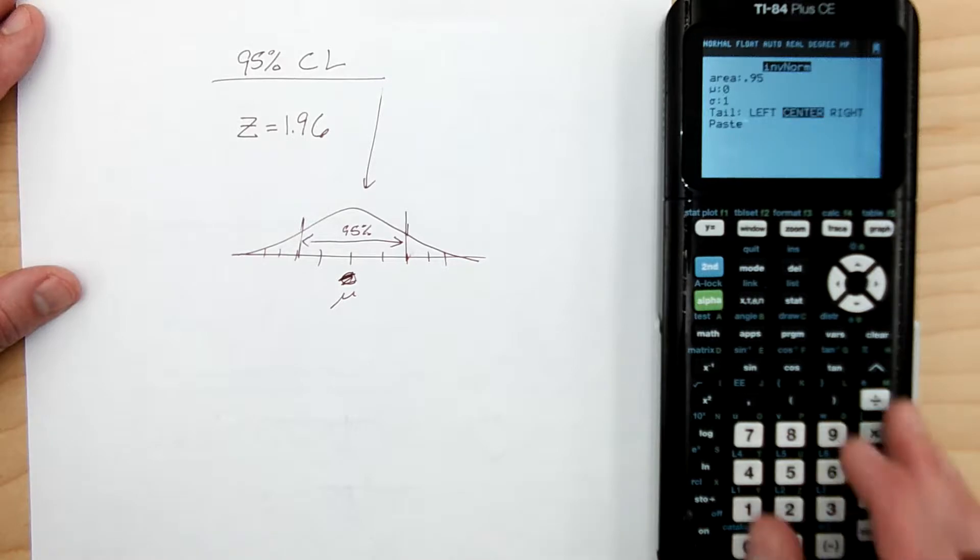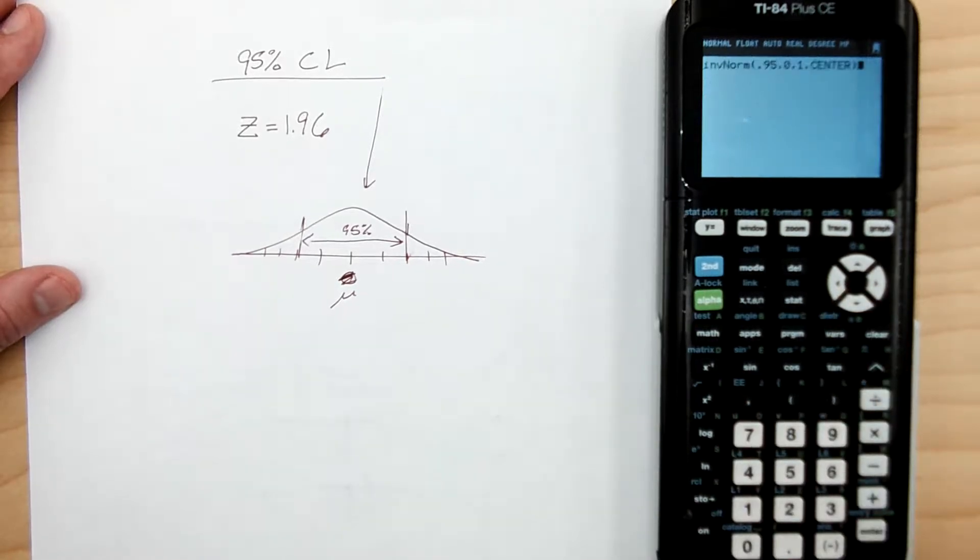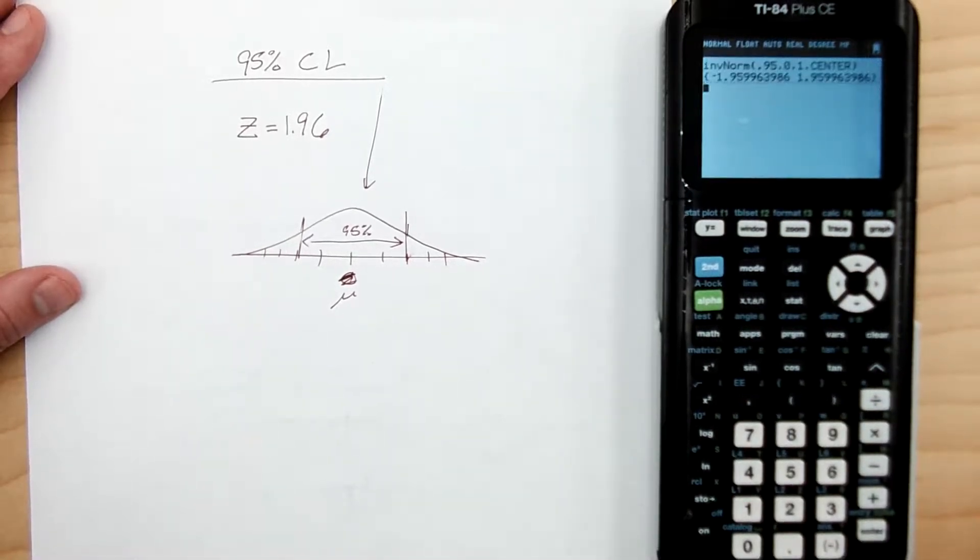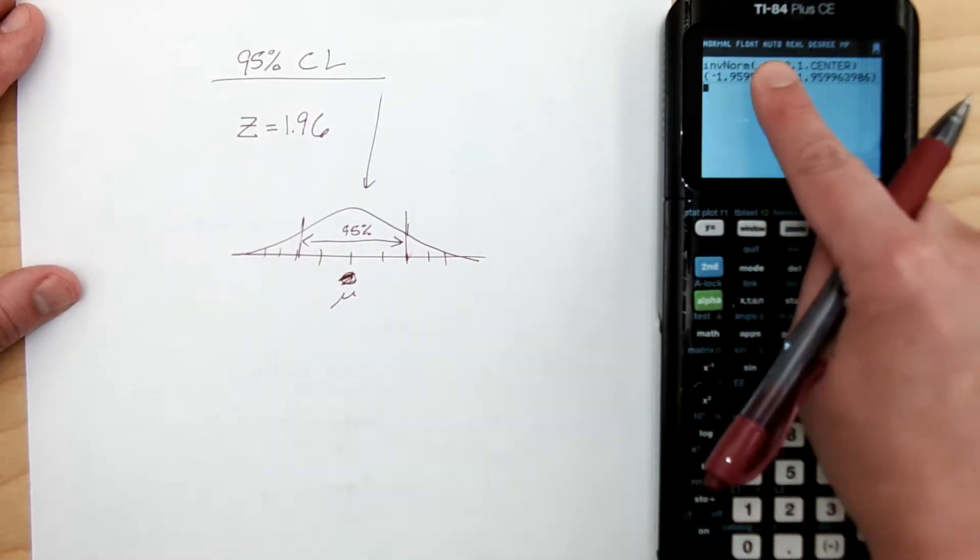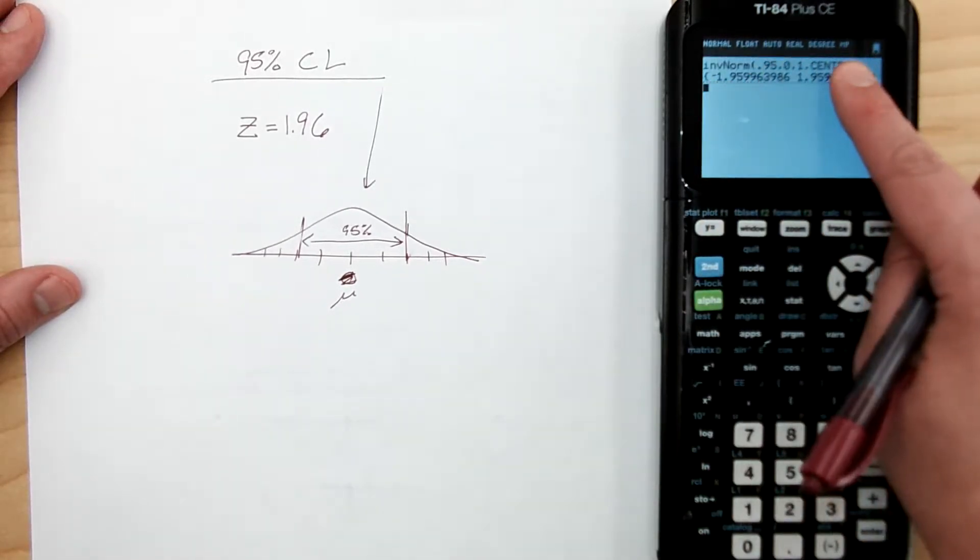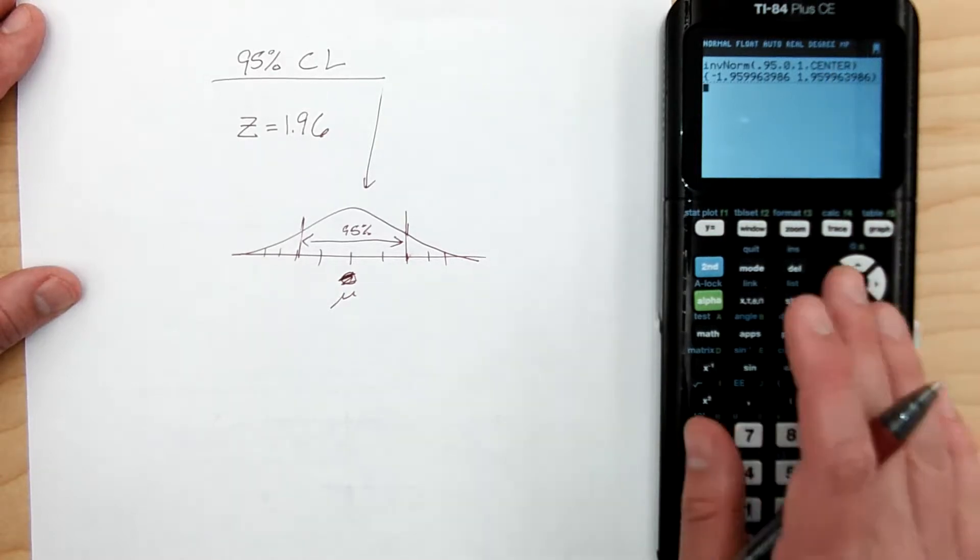And we'll hit paste and enter. And there we go. I know it's about 1.9, around that 6, to about 1.96. Awesome.